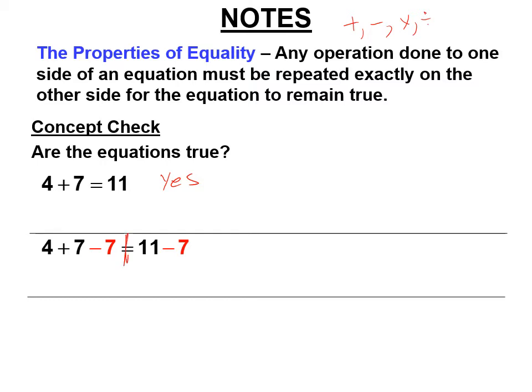Now the equal sign is the divider between the two sides. Equations have sides. And so the border between the two sides is the equal sign. You can write the border in if it helps you see it. And in this one, I subtracted 7 from both sides. Let's see if the equation is still true. 4 plus 7 is 11. 11 minus 7 is 4. Adding and subtracting 7 are inverse operations. Is that true? Yes. If you subtract 7 from both sides of that equation, the equation is still true.